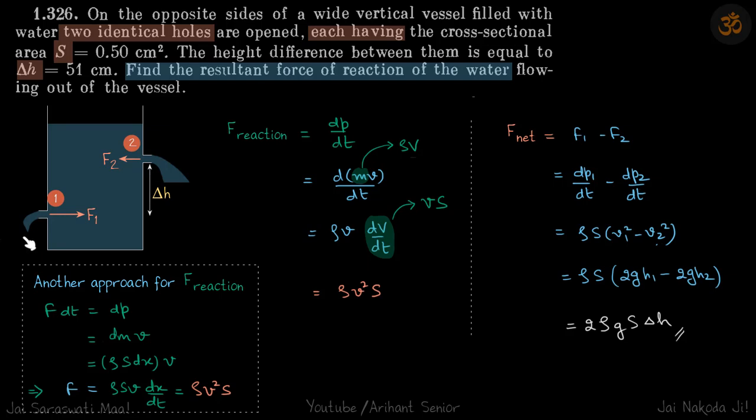Let's write that general formula DP by DT when the liquid is coming out of an orifice, let's say with a velocity V. So if water is coming out from a hole with a velocity V, the rate of momentum change will be DMV.